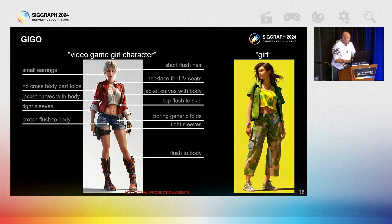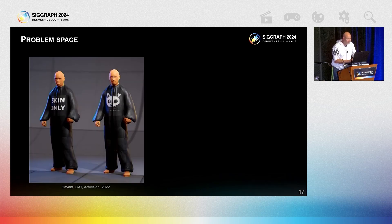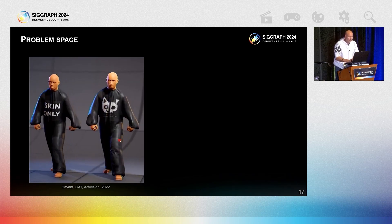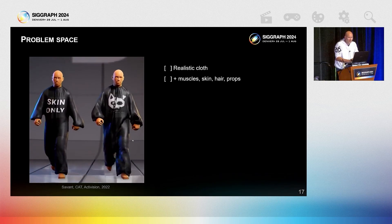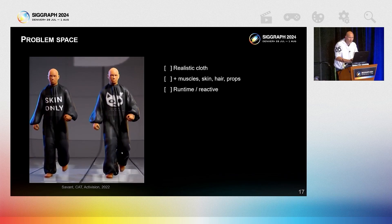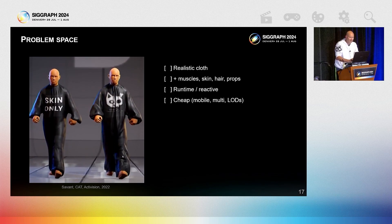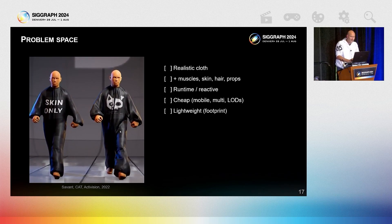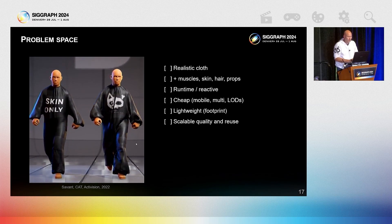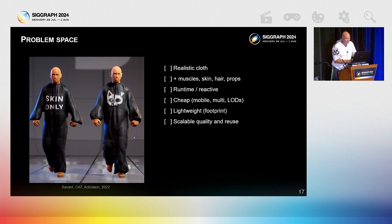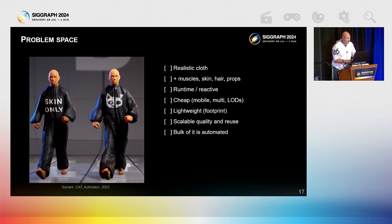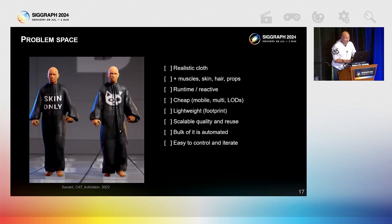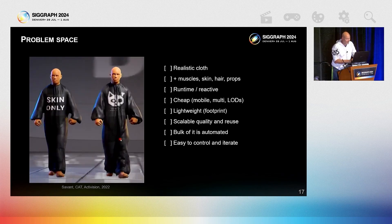So what should a proper secondary animation solution solve? We want realistic cloth, muscle skin, hair, and props — reactive to runtime forces, cheap to run per frame, and low on footprint — with scalable quality and reuse for combinations, automated as much as possible, and yet art-facing for creation and iteration.